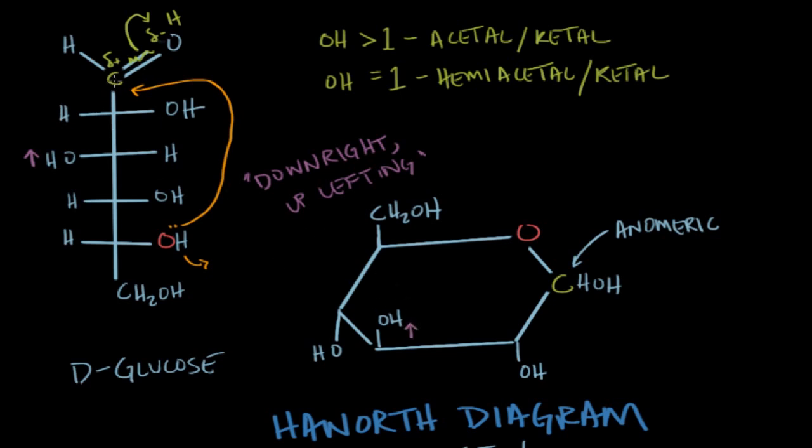And maybe we'll name this. Or maybe we'll start numbering with one, two, three, four, five, six. And we can do that over here. This would be one, two, three, four, five, six. So our three carbon in the Haworth diagram is pointed up. And our three carbon on the Fischer diagram has its substituent on the left. So downright uplifting.